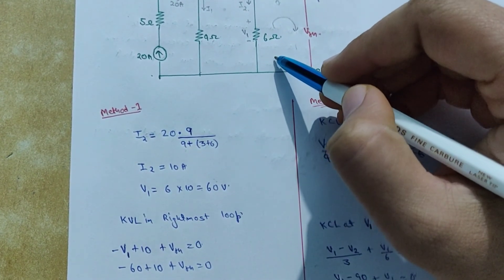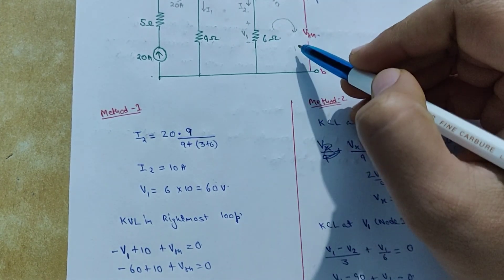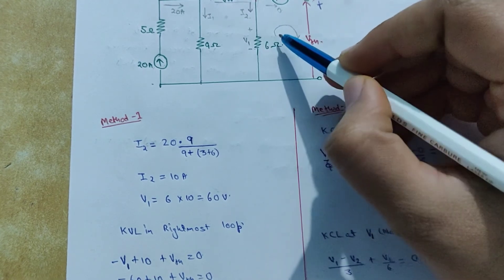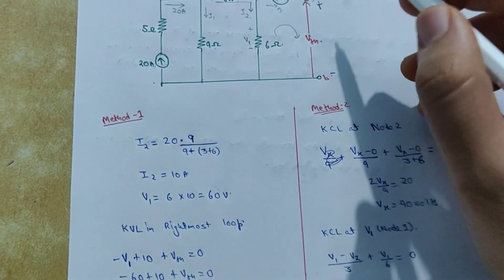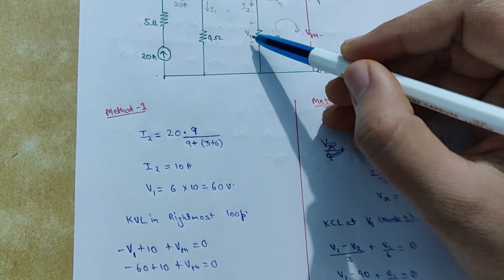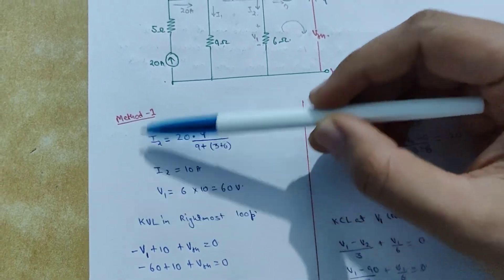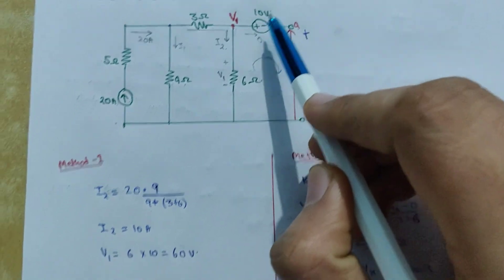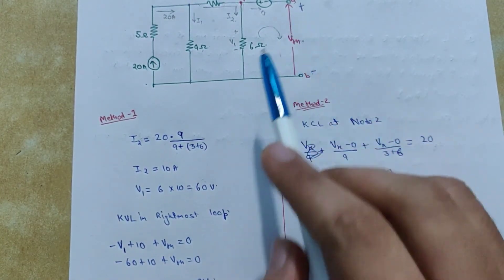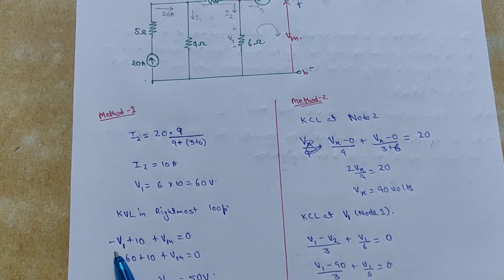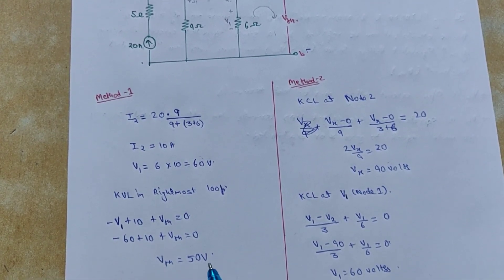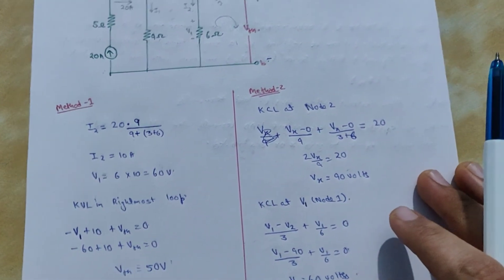I will apply KVL in this loop to calculate VTH. Assume a clockwise direction in the loop and assign polarities to every voltage. Starting from this resistor: minus polarity is coming first, so minus V1; positive polarity of the 10-volt source is coming first, so plus 10; and plus VTH is coming first, so plus VTH. Therefore: minus V1 plus 10 plus VTH equals zero. Substituting V1 equals 60 volts, VTH comes out to be 50 volts.